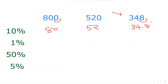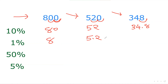To get 1 percent, we repeat the same process again — the decimal point moves two steps to the left. So for 800, that leaves just 8. For 520, the decimal point moves two steps back, giving 5.2. For 348, two steps back gives 3.48. If you already have the 10 percent, you can just move one more step back to get the 1 percent. So: 10 percent — one decimal point back; 1 percent — two decimal points back.